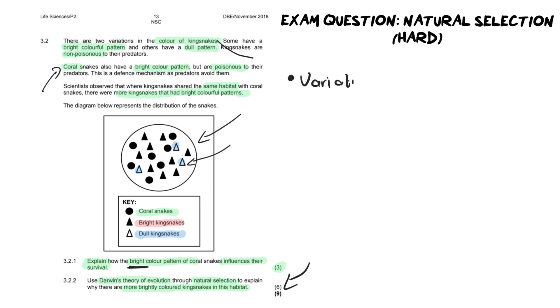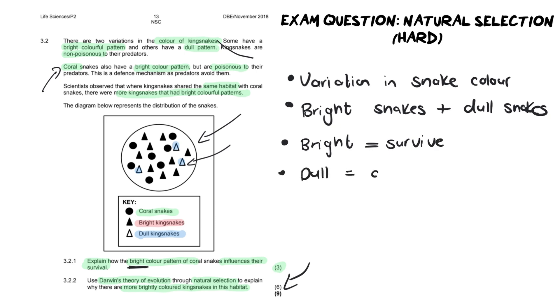So instead, what you're going to do is you are going to substitute in your snake variation. You could say something like there is a variation in snake color or the brightness of that. And then you're going to say that there are some that are bright, so we've got bright snakes, and we've also got dull snakes. So acknowledge the color differences. Next, you need to indicate which is favorable and which is unfavorable. You could say that the bright is favorable, bright means you will survive. And if you're a dull snake, you will die.